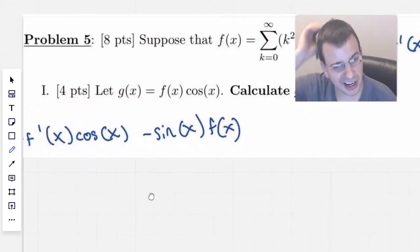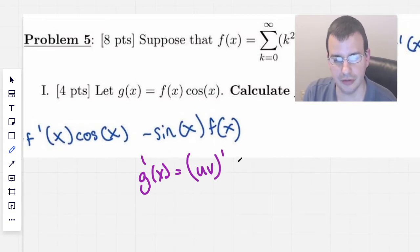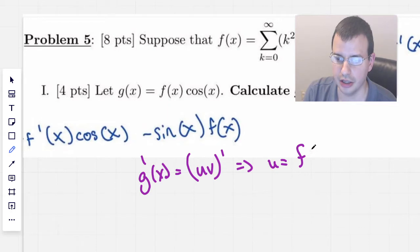So first thing we want to do is find g double prime of x. I'm going to say g(x) equals u times v, so g prime will be uv prime. Therefore u will be f(x). This is the product rule.